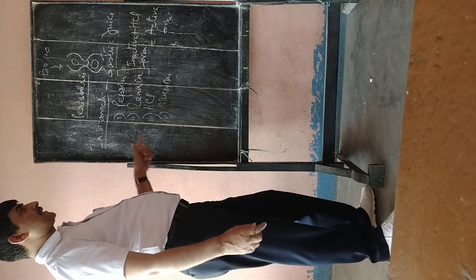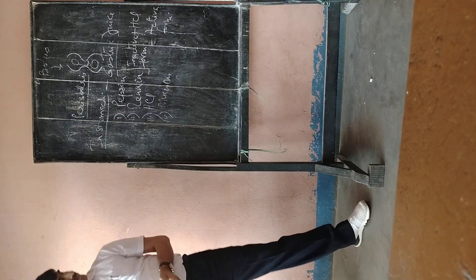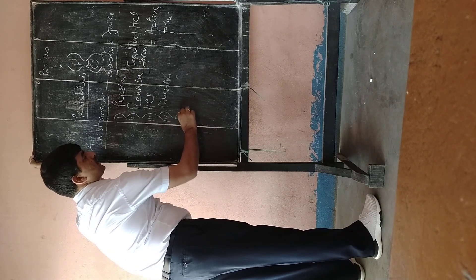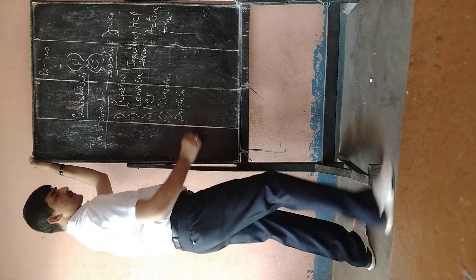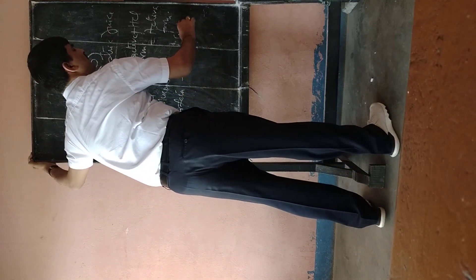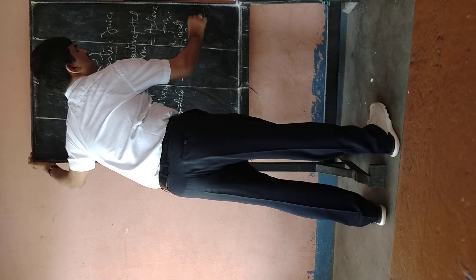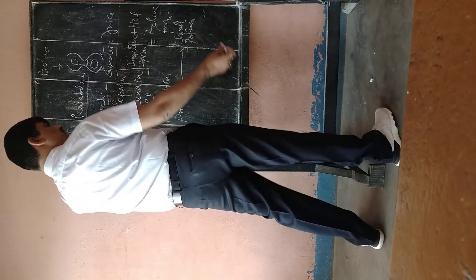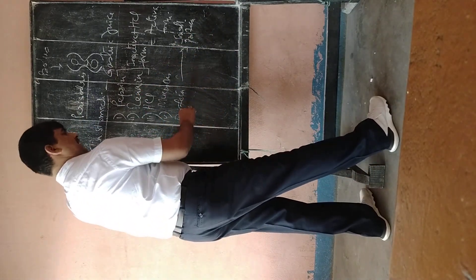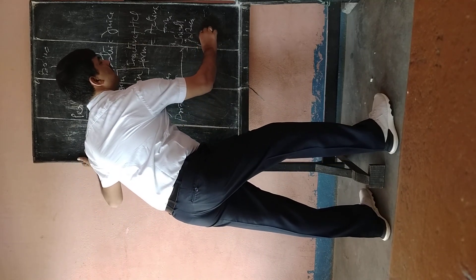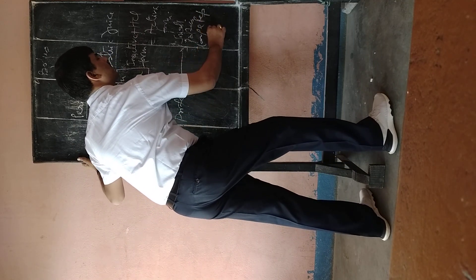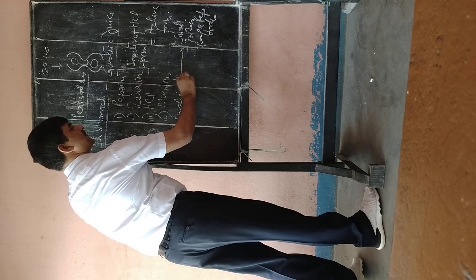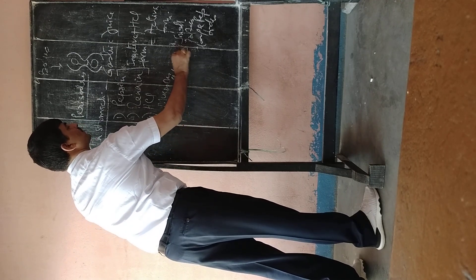So, pepsin and renin are the two enzymes. So pepsin digests proteins, large protein into small protein. That is, you can say proteins into peptides, proteins into large peptides. Pepsin in presence of HCl.